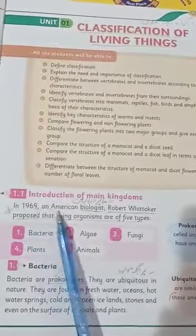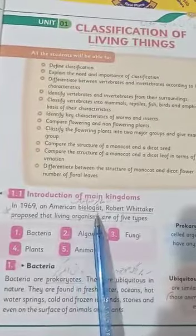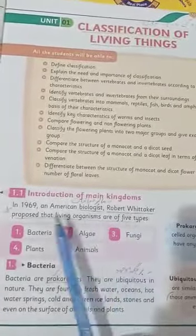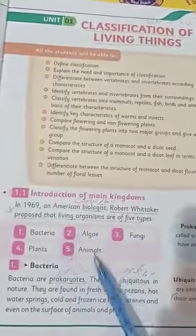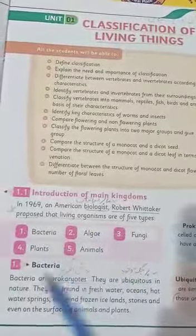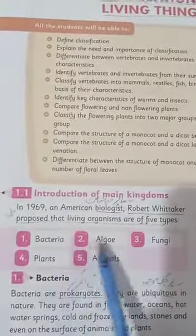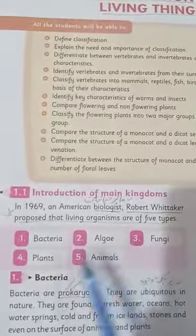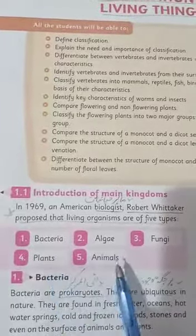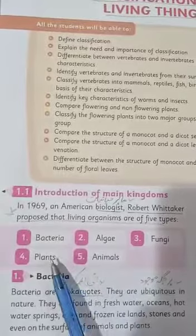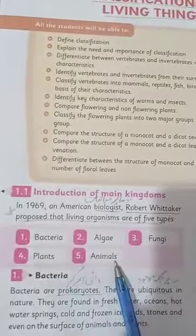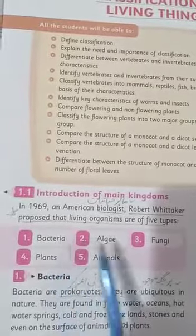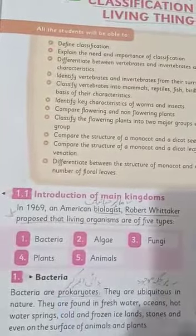In 1969, an American biologist named Robert Whittaker classified organisms into 5 types. These organisms can be classified into 5 types. The five types are: Number 1, bacteria. Number 2, alga. Number 3, fungi. Number 4, plants. Number 5, animals. I hope that plants and animals are already introduced to you — you know what plants and animals are. The new terminology — bacteria, alga, and fungi — I will describe in this chapter.